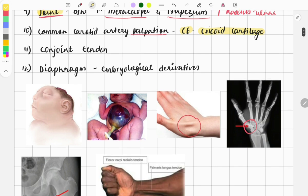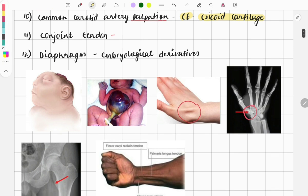Then the conjoint tendon—the question was asked giving a few lines about it and you had to choose the correct answer. Next, diaphragm—also a very important topic. This year the question was asked on its embryological derivatives. The dorsal mesentery gives which parts of the diaphragm.